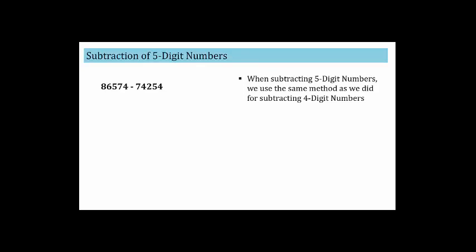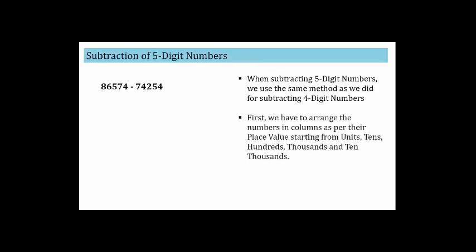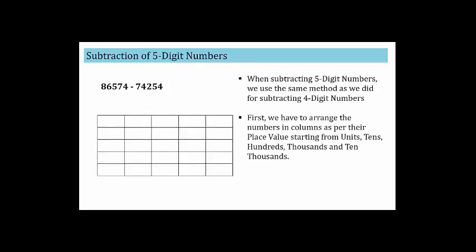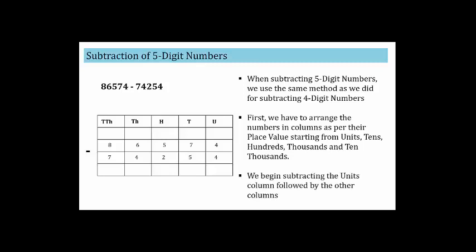Let's solve an example: 86,574 minus 74,254. First arrange the numbers in columns as per their place values — units, tens, hundreds, thousands, and ten-thousands. We begin with the units column: four minus four equals zero. Remember — if the numbers are the same, zero is the answer. We write zero.